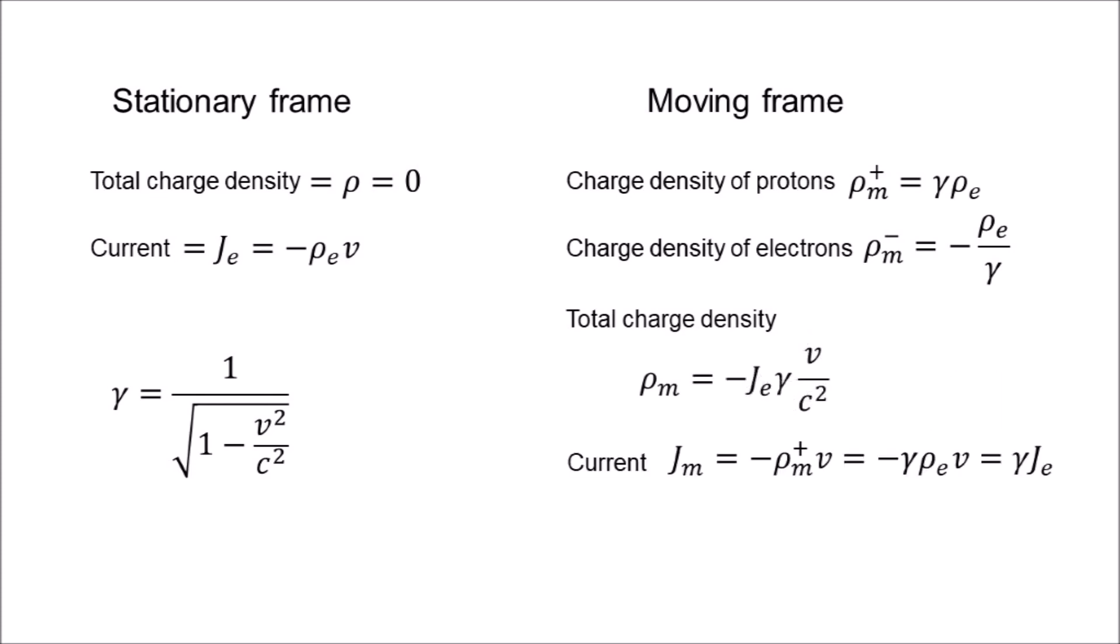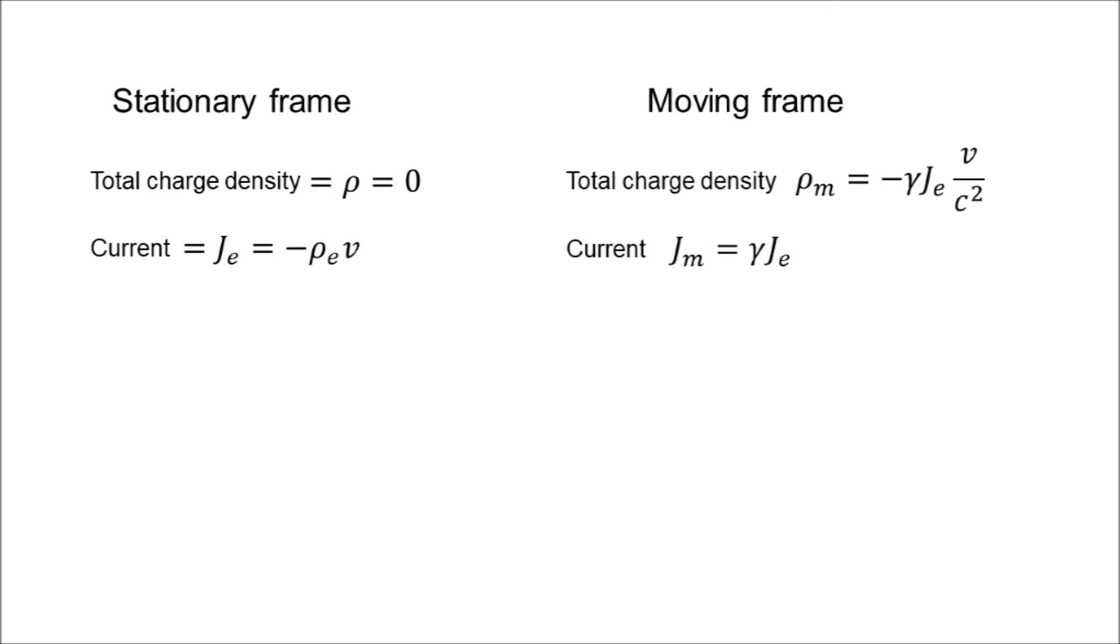The current in the moving frame is simply the positive charge density, as it is the positive charges that are moving in this frame, multiplied by their velocity, which is now oriented to the left, hence the negative sign. So, there we have it. These are the charge densities and currents, as measured by the two observers.